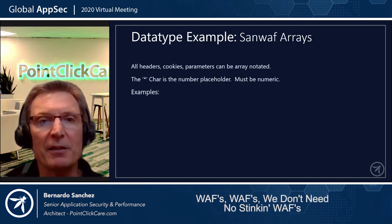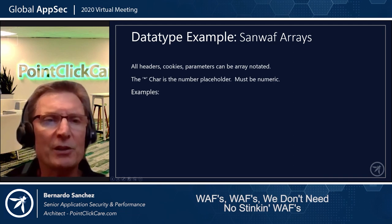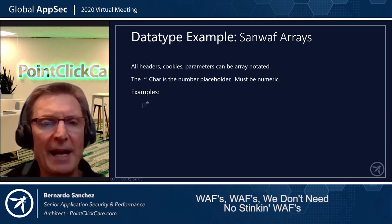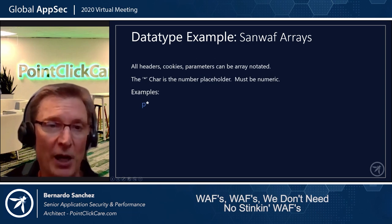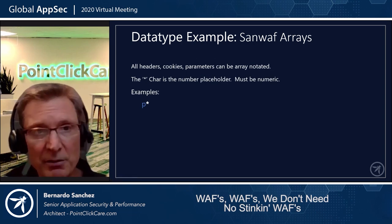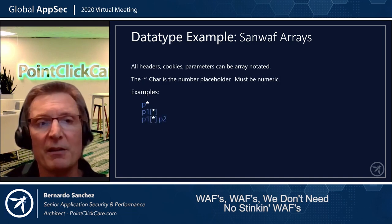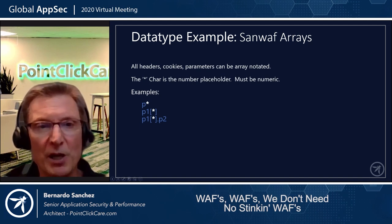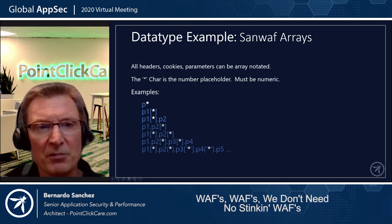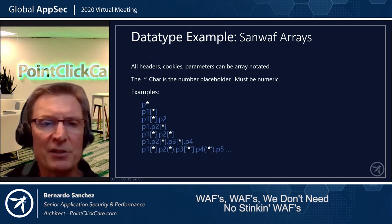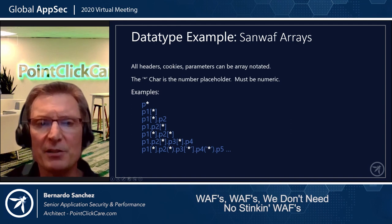All headers, cookies, and parameters can be array-notated using the star character as a placeholder. For example, 'p*' would match parameters p1, p2, p3, p4, and so on — all required to be numeric. You can use square brackets, dots, regular parentheses, and more. The complexity can increase as needed; it's very flexible and easy to use.